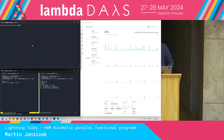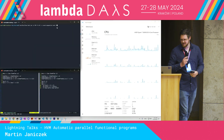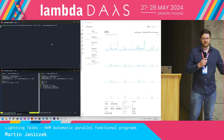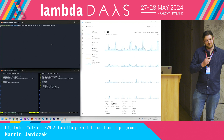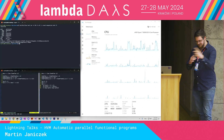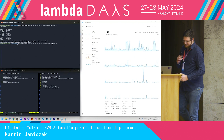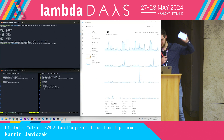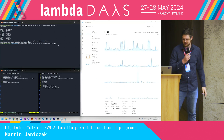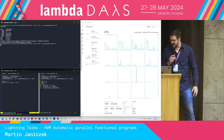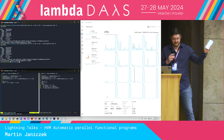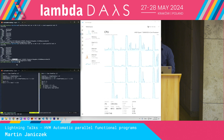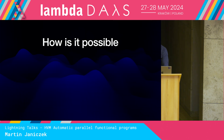I have a recording of an experiment I've done, where I have two versions of a program — it just counts recursively. The left one is sequential, the right one is parallel. We can see the sequential one just uses one core, bouncing between the physical cores. And now when I run the parallel one, it uses all the cores — you can see the spikes. I think that's pretty magical.